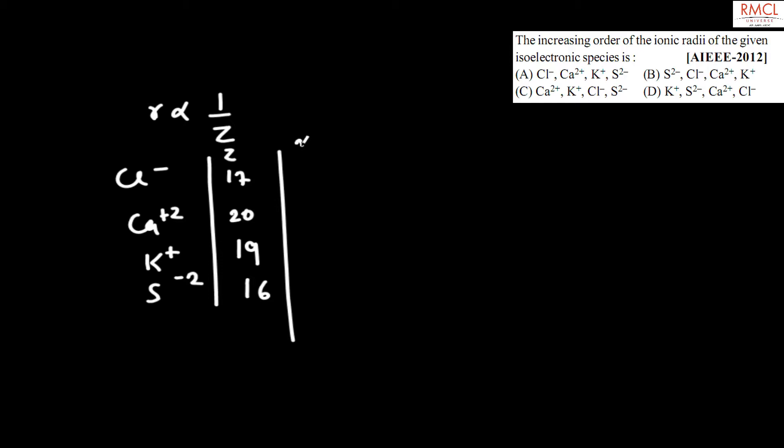Number of electrons: Ca2+ removes two electrons so remaining electron is 18. In potassium K plus it removes one electron so remaining electron is 18, and S minus 2 also has 18 electrons.